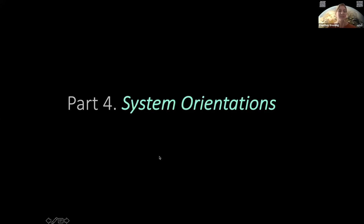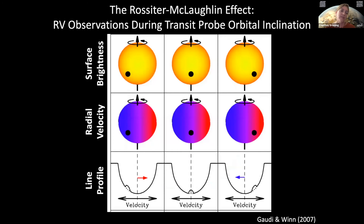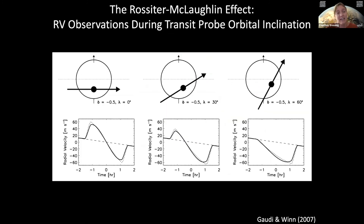We can also use transit observations to study system orientations. When a planet crosses in front of the star, it will be blocking the part of the star that's moving towards us or away from us based on the rotation of the star compared to the planet's path. If we take radial velocity observations during transit, we can see whether we're losing primarily blue-shifted or red-shifted light. This technique is known as the Rossiter-McLaughlin effect, and it allows you to measure the orientation of the planet's orbit around the star, which is important because it lets you look at models of planet formation.